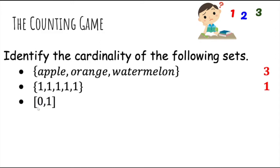What about the set of real numbers from zero to one? There's an infinite number of real numbers between zero and one, so the cardinality is infinite. What about the set of positive integers? You can keep adding up, so there's no end to the positive integers — the cardinality is infinite.